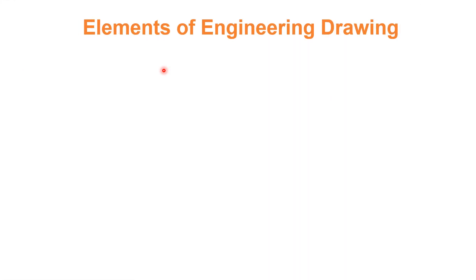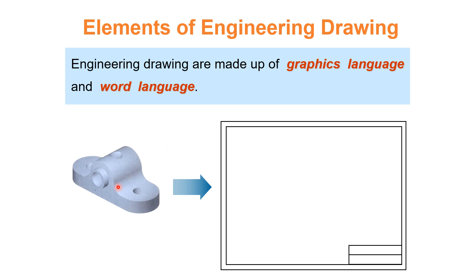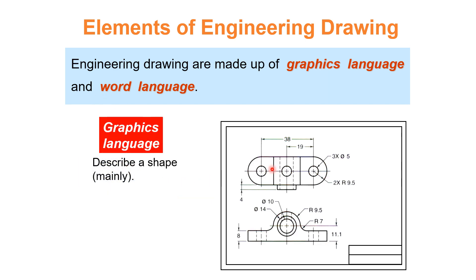Engineering drawing elements: engineering drawings are made up of graphics language and word language. In this example you can see an object drawn using instruments. The graphics language consists of all the line features — highlighted in blinking red and black — which show the actual parts of the drawing.